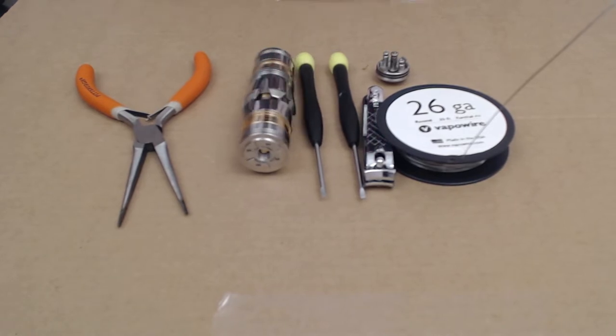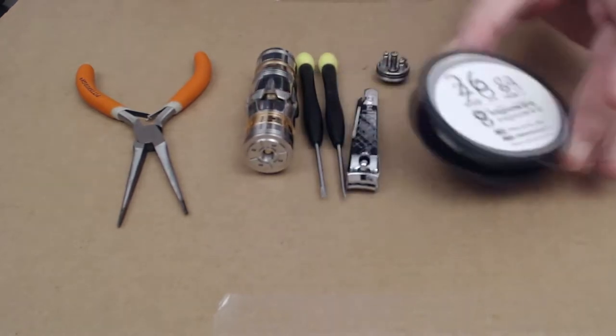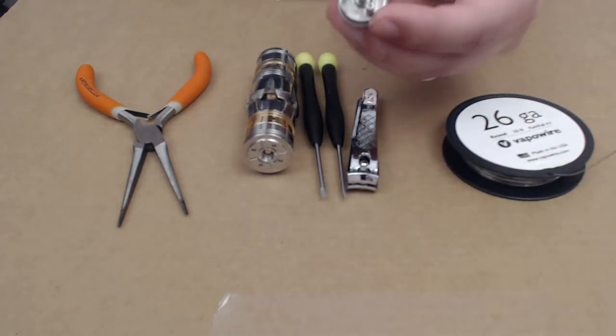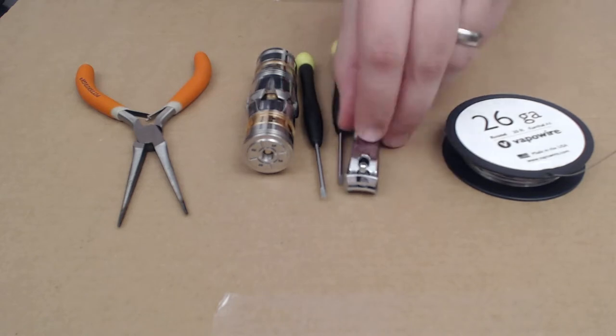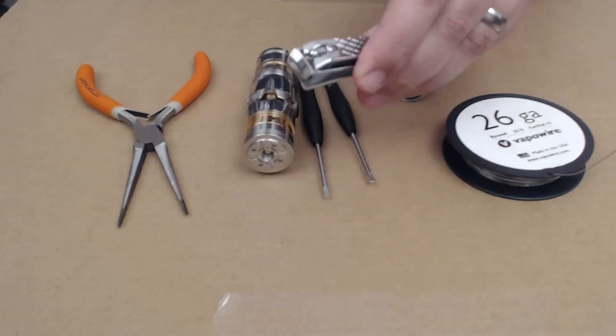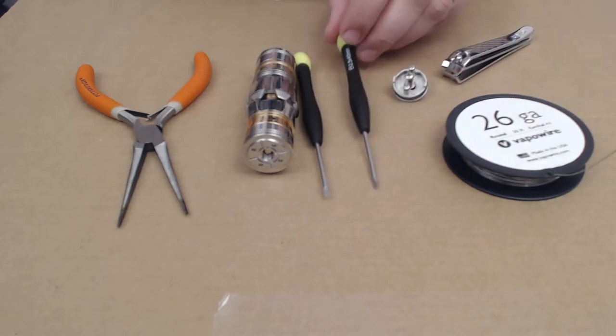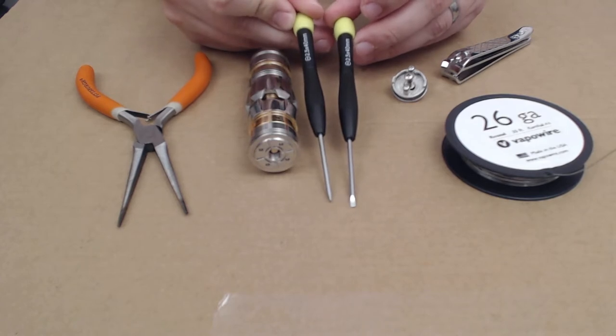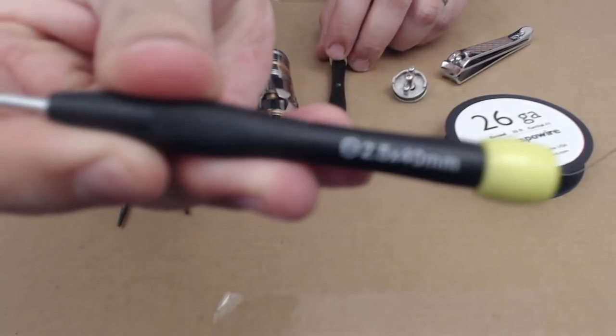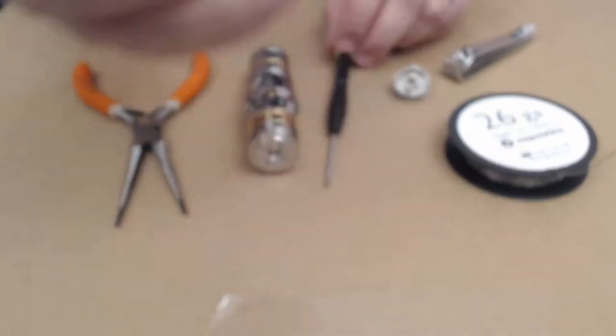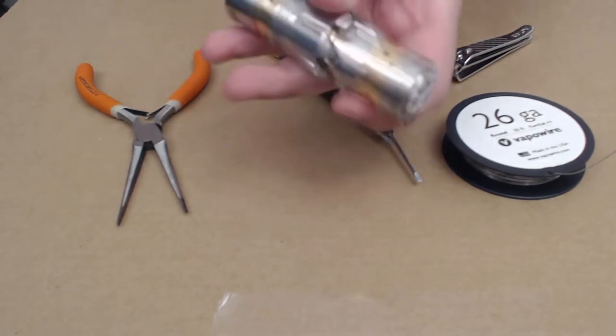Alright so here we are. What you're gonna need to build: you're gonna need some wire, we're gonna use 26 gauge today. Obviously you're gonna need your RDA - we're gonna be building on a Tobe RDA. We're gonna use, you need something to cut the wire with, right now I have nail clippers. I usually use some little pliers but I don't have them with me. And then I use two 2.5 millimeter screwdrivers.